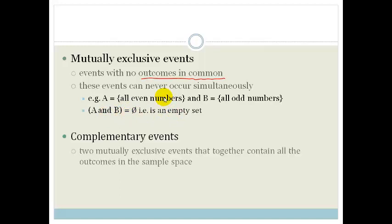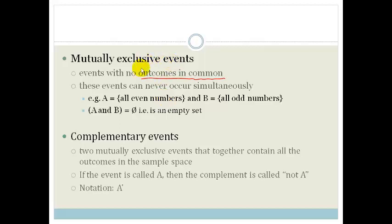Now complementary events are two mutually exclusive events that together contain all the outcomes in the sample space. So again, if we think about it, if the event is called A, then the complement is called not A. So if we look at this example here, this is all the even numbers and this here is all the odd numbers. So together they have all the numbers in the known universe. Right, so the complement of A in this case, which is referenced as not A, notation A dash, not A, would be B. So the complement of A in this case would be B and those are complementary events, and they're complementary events if between the two of them they contain all the outcomes in the sample space.